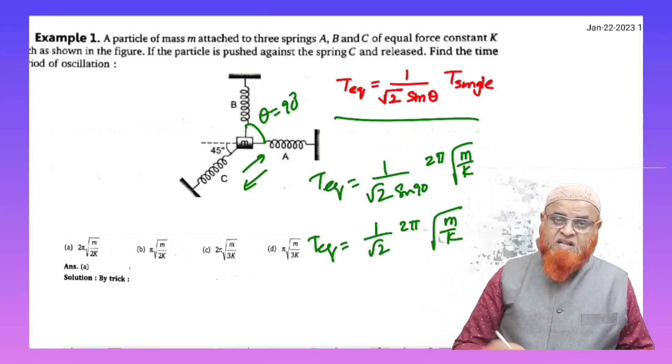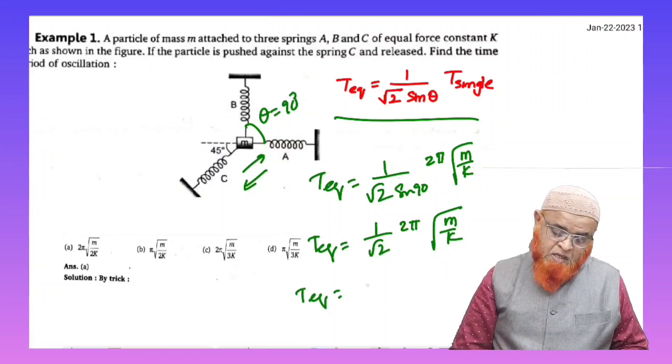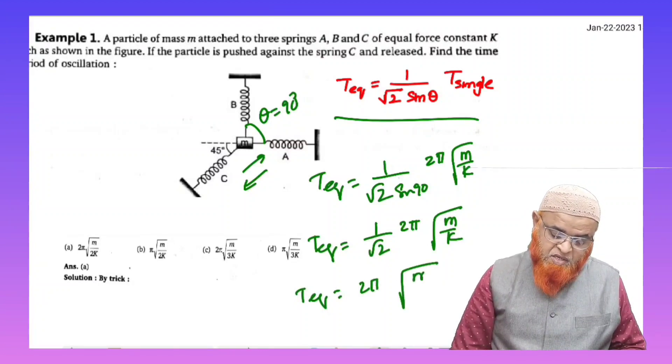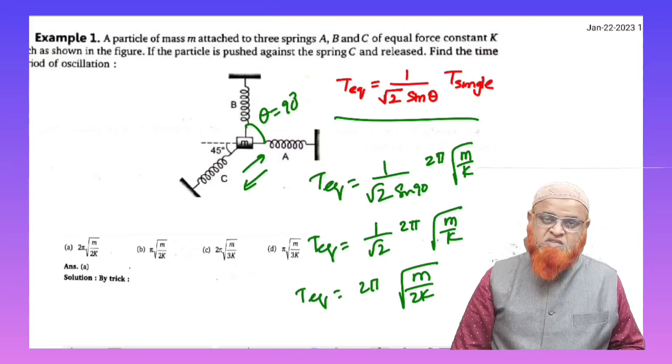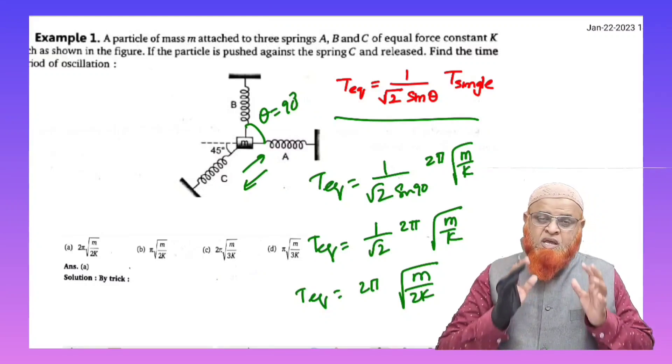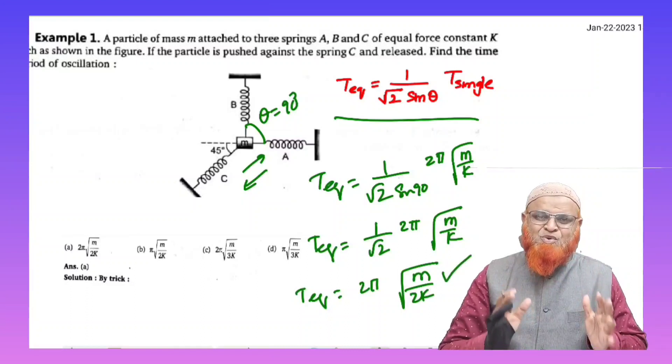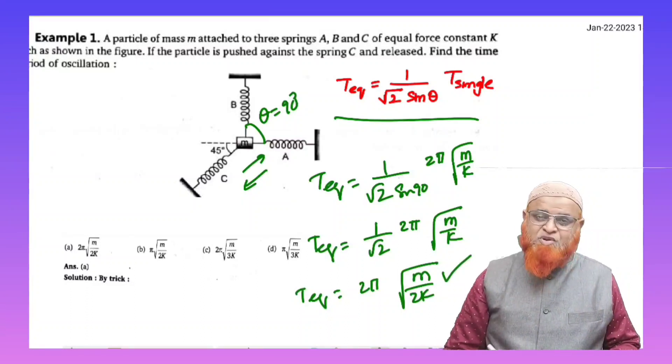So this root 2 you can send inside the spring. Just you can write T equivalent is equal to 2π√(m/2k), because 2 is also having root, k is also inside there, so you can just write directly 2k inside. That's it, this is going to be your solution.